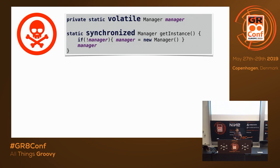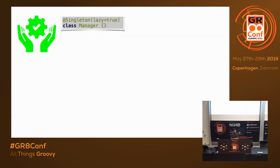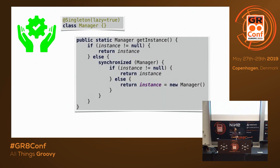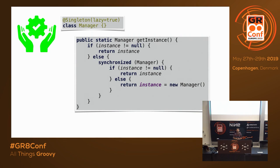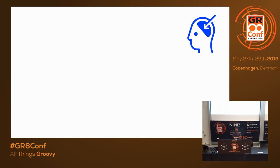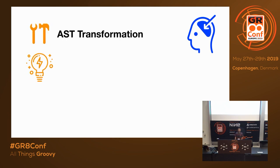Groovy provides just a parameter on the @Singleton AST transformation. By default it's eager. However, you can say lazy=true and it will generate the double-checked locking code. The creation is synchronized, but if the value is not null, it's not synchronized, so multiple threads can access the instance together. The tool is the AST transformation, and the important principle is YAGNI — You Aren't Gonna Need It. If you don't need lazy, don't implement all the complicated things; keep it simple. If it is required, you can always enable it.